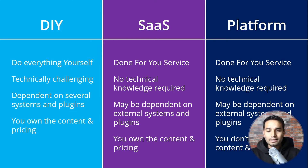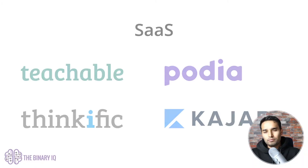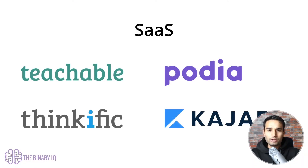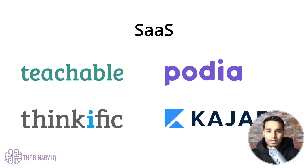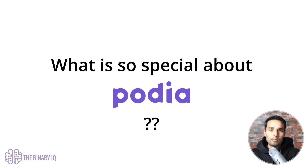The best thing about a SaaS model is that you own the content and the pricing, bringing the best of a DIY system together with the ease of a platform where the service is done for you without needing much technical knowledge. The most popular SaaS systems out there are Teachable, Thinkific, Kajabi, and Podia. After using all of these quite extensively, I have found that Podia works the best.